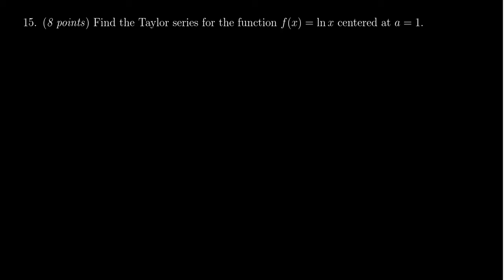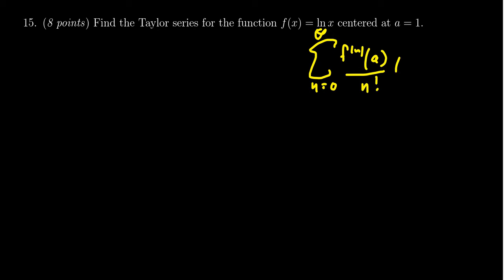One thing to remember when it comes to Taylor series is that the formula is the sum where n ranges from zero to infinity. You get the nth derivative of the function evaluated at the center a, divided by n factorial, times x minus a to the n.